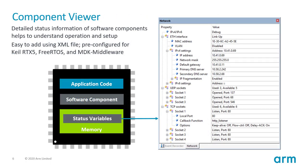The component viewer provides detailed status information of software components. For example, you can see clear status information about a network stack. It is based on an XML file pre-configured for several software components — FreeRTOS, RTX, and MDK middleware — giving ready-to-use output based on status variables read from the target application.